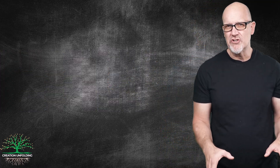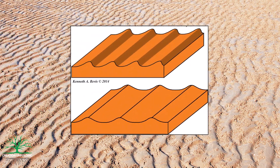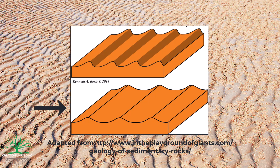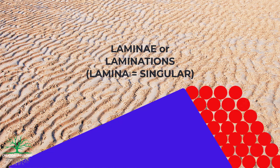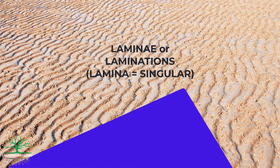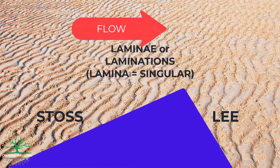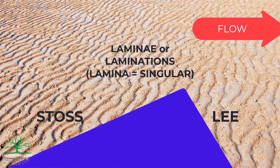The last group of sedimentary structures we'll look at today are ripples. There are two basic kinds: symmetric, or wave ripples, and asymmetric, or current ripples. Asymmetric or current ripples form in much the same way as dunes, with propagating sets of tiny beds called laminae — a term geologists apply to bedding at the millimeter scale. Just like dunes, ripples will have stoss and lee faces, hence the term asymmetrical, and they form due to the movement of unidirectional currents, such as when the tide either ebbs or flows.